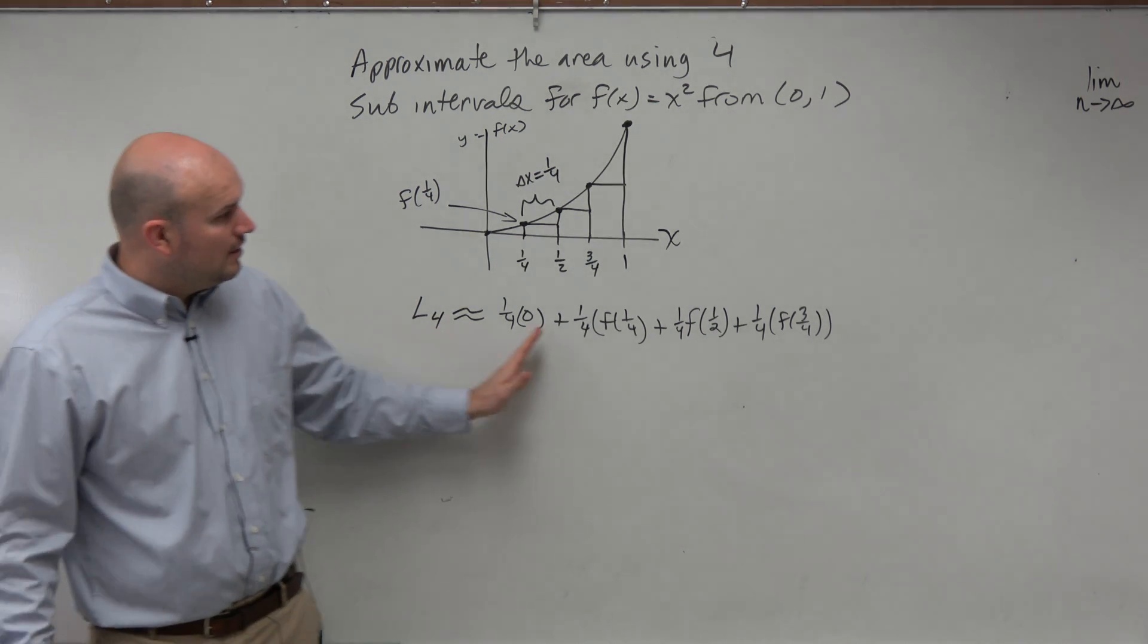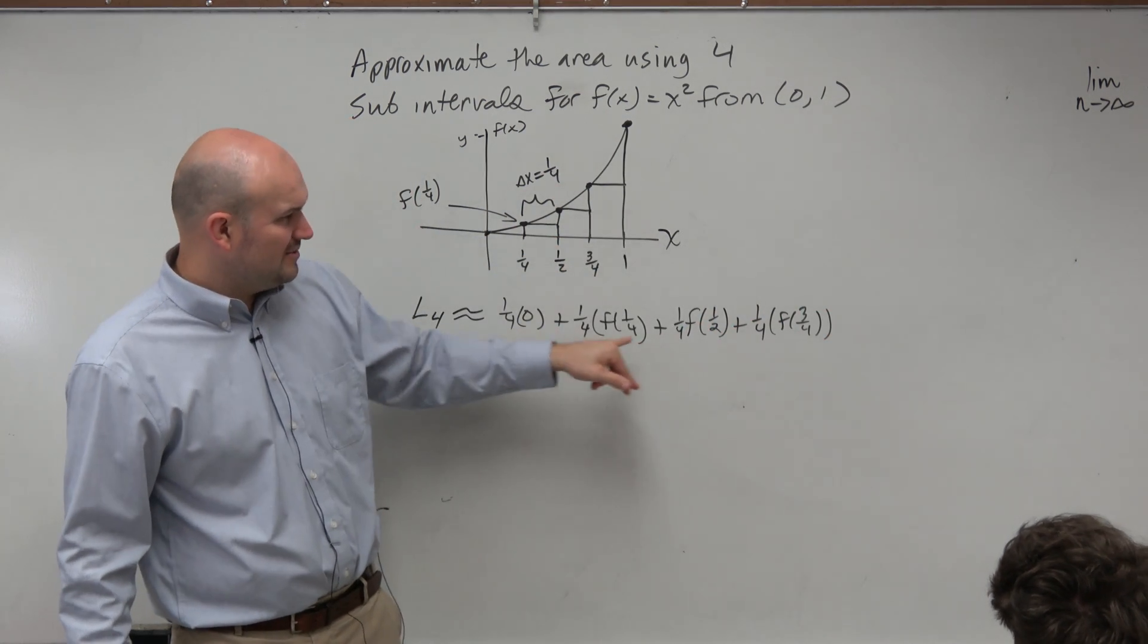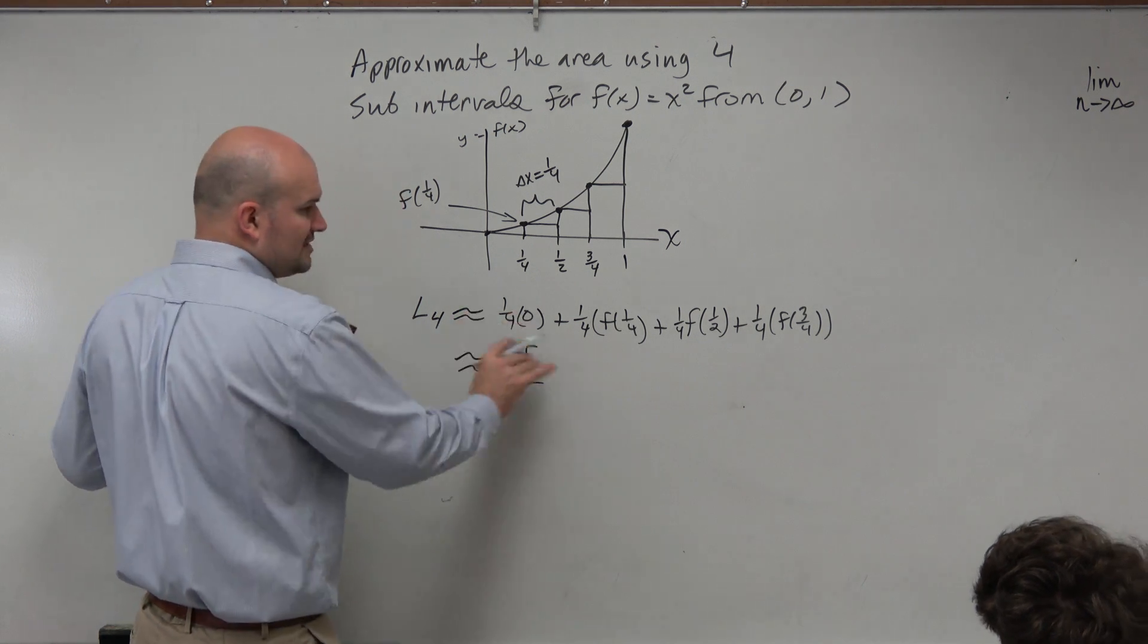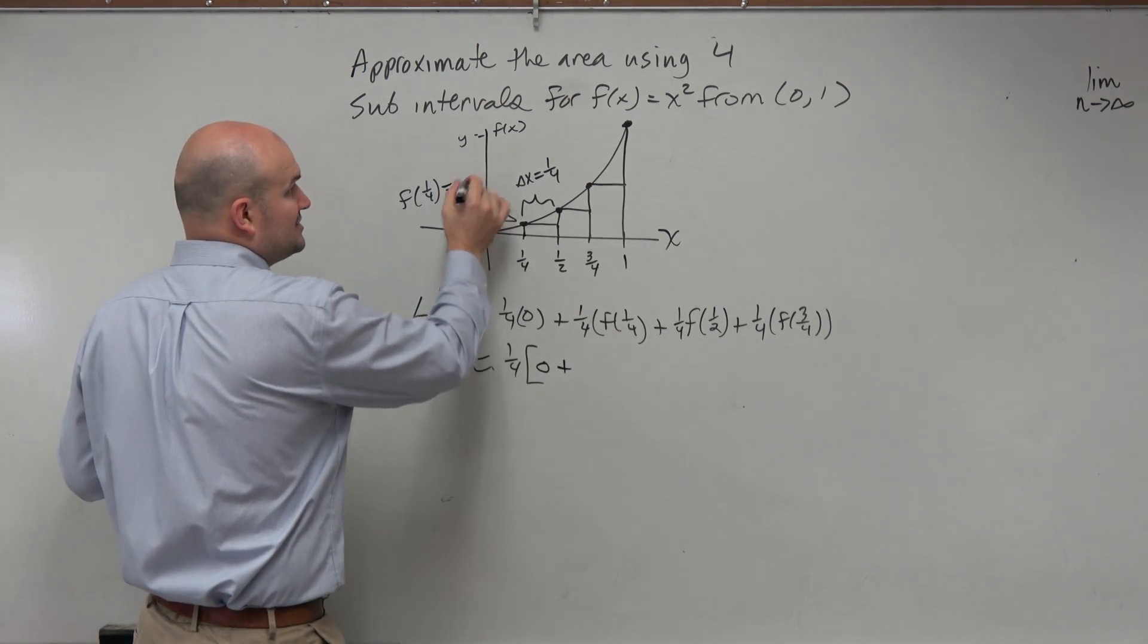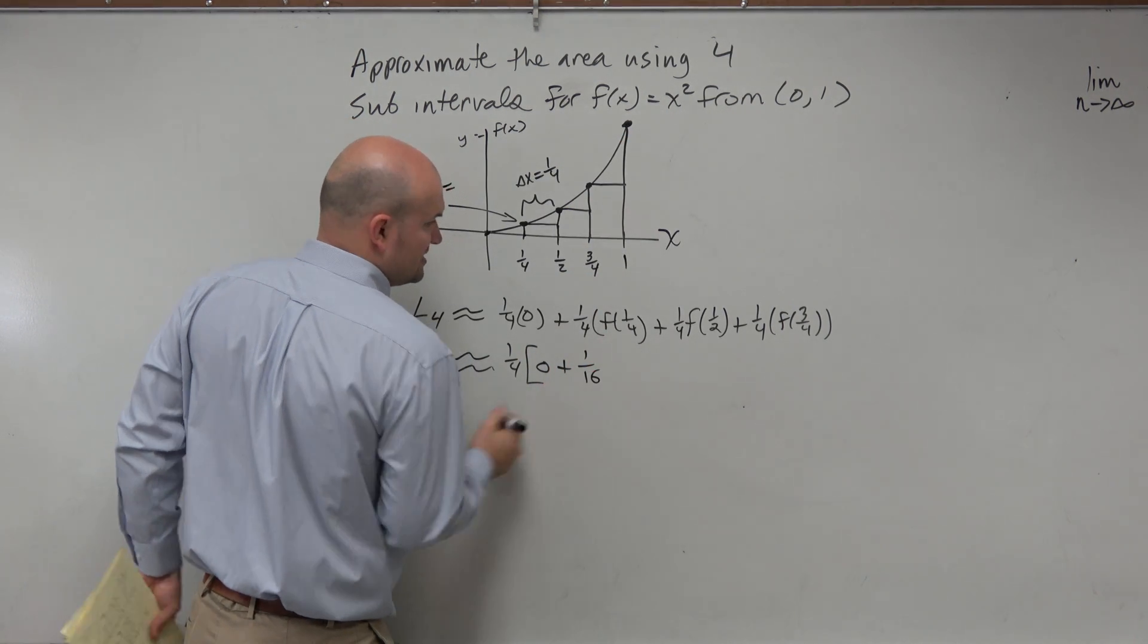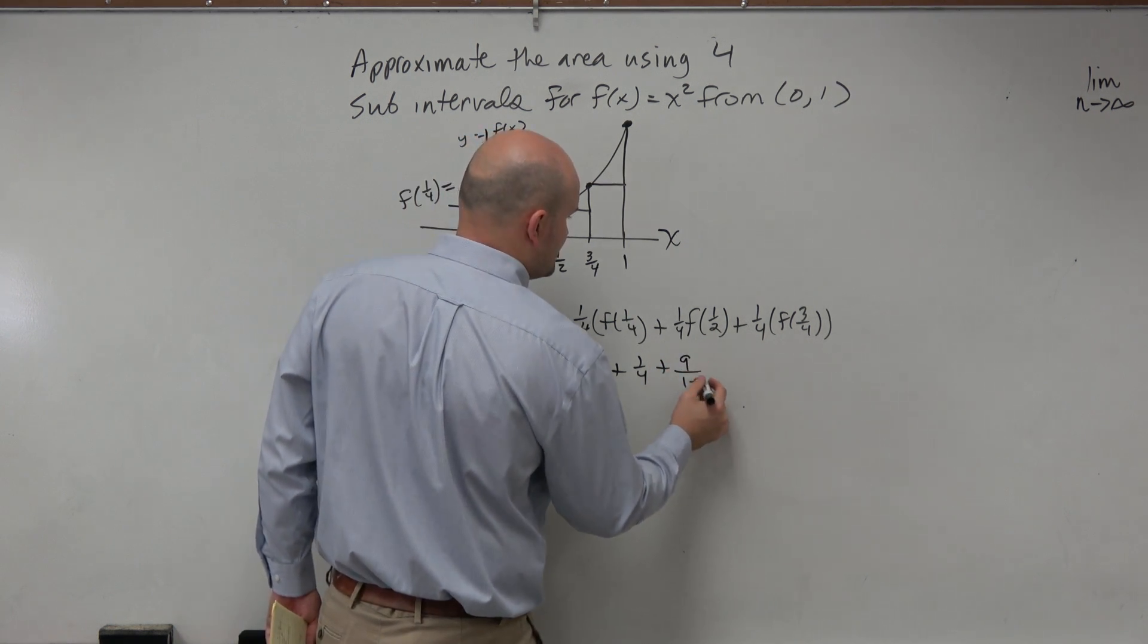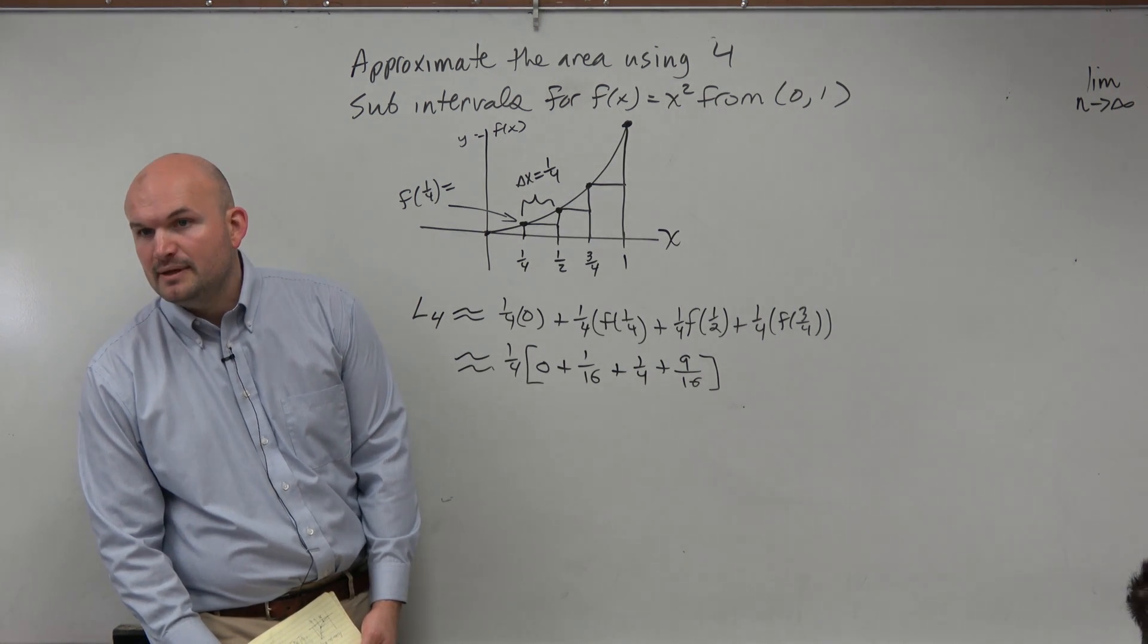Now, the nice thing about this method, or at least by looking at this, when we have a uniform delta x, meaning the base is the same, is it possible guys that we could factor out a one-fourth here? Can we factor out a one-fourth? Yes. Yeah, and that's going to make our life a little bit easier. Now, let's go ahead and figure out what exactly is. Well, we're going to have zero, plus f of one-fourth, let's just plug that into our function, so that's going to be one-fourth squared, which would be one-sixteenth, plus one-half squared, which would be one-fourth, plus three-fourths squared, which would be nine-sixteenths.